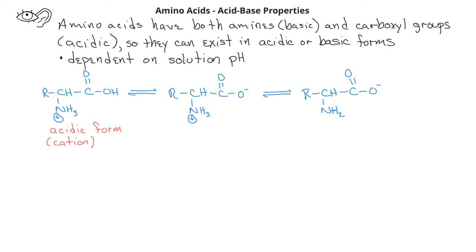These structures are called zwitterions from the German meaning a hybrid ion, because they're a combination of both a positive and a negative ion.